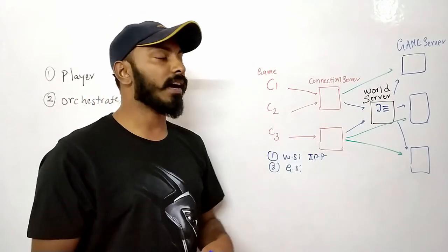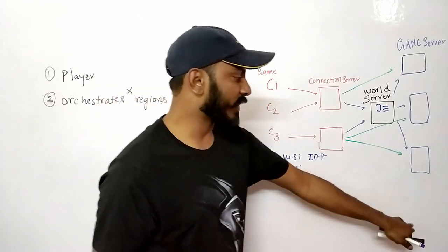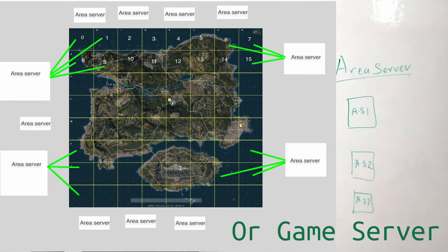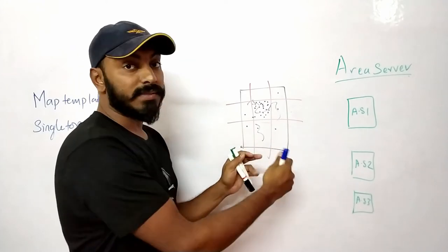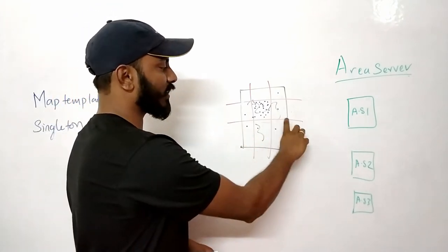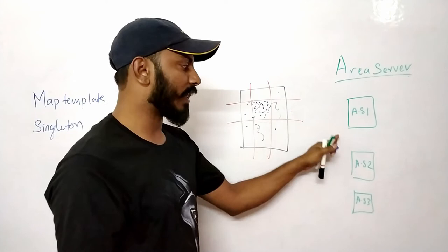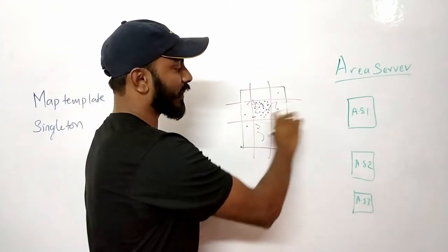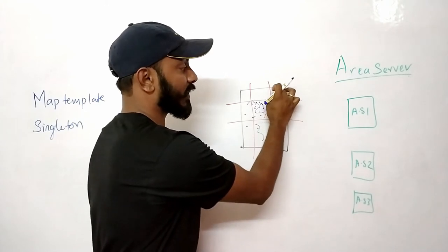The world server also handles scaling of the game servers — if more players are added, we may need to scale game servers further. Area servers manage the region map and control all aspects of the game happening on a particular region or segment of the map. As already explained, the map is broken into multiple pieces — say nine different segments. Each segment can be distributed to different area servers. For example, with three area servers, you can distribute segments across them using some strategy, or with nine area servers, designate one segment per server.